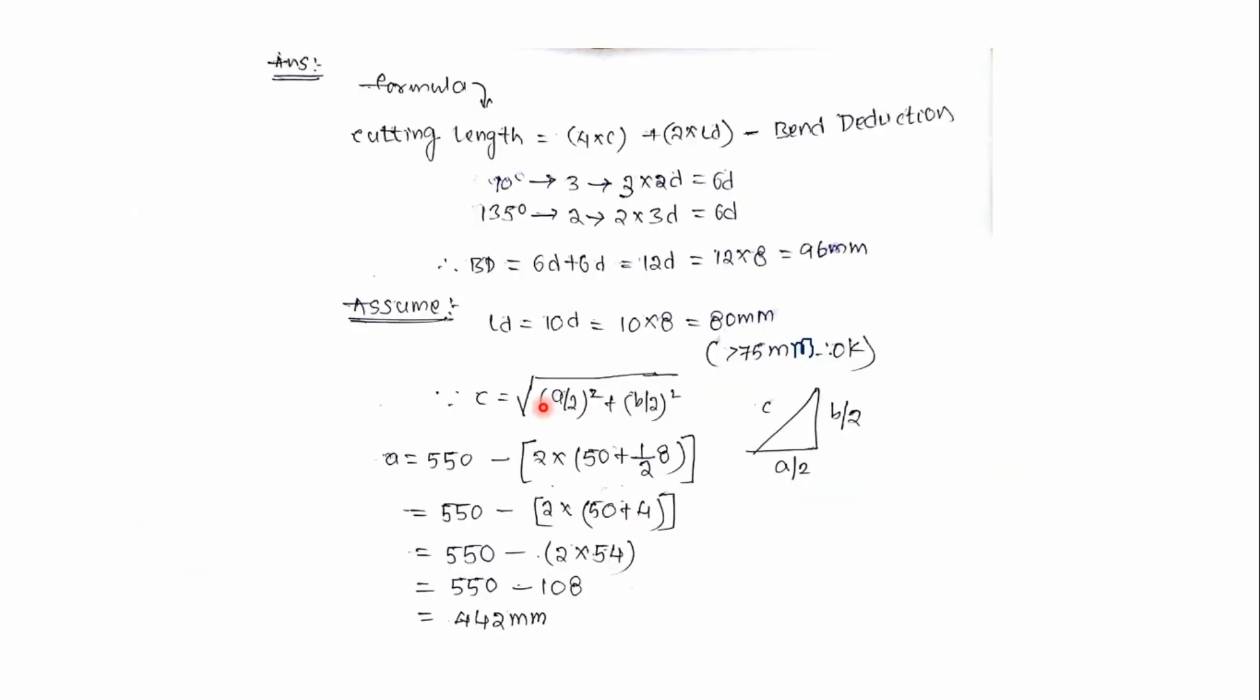So therefore 550 minus 2 into (50 plus half of the bar, that is 8 mm divided by 2 which is 4). 50 plus 4 is 54, so 2 multiplied by 54 which is 108. Subtract this 108 from the 550, then you will get 442 mm. Similarly, b equals 450 minus 108 which equals 342 mm.